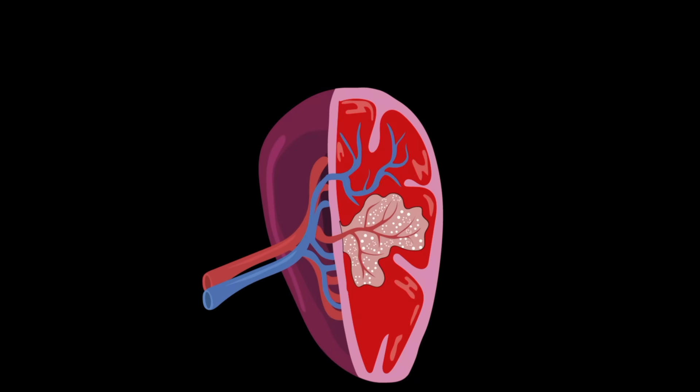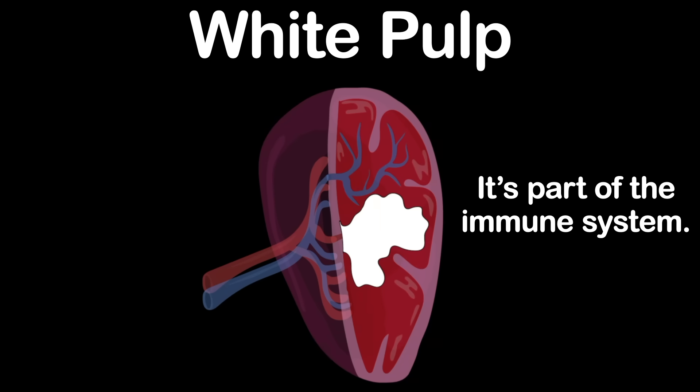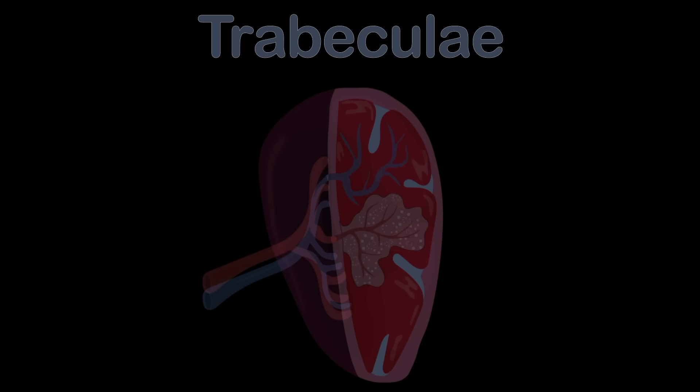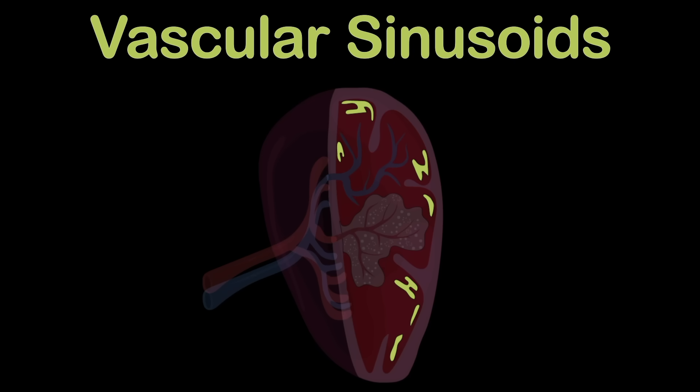The second main tissue is called white pulp. It's part of the immune system, mainly made up of white blood cells. The trabeculae of the spleen is the framework within, which is attached to the capsule — it surrounds the spleen and it's thin. Vascular sinusoids are vessels that drain into pulp veins. We'll learn how this all works, but first let's sing again.